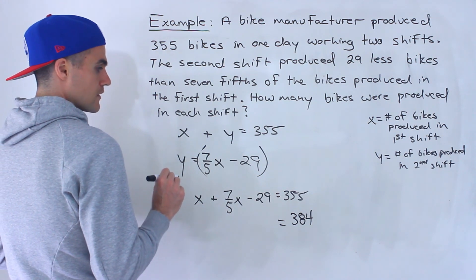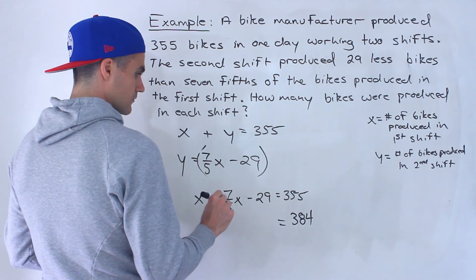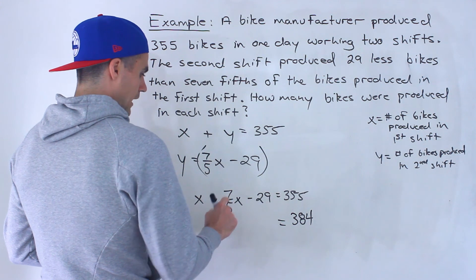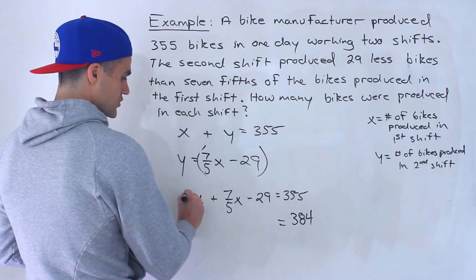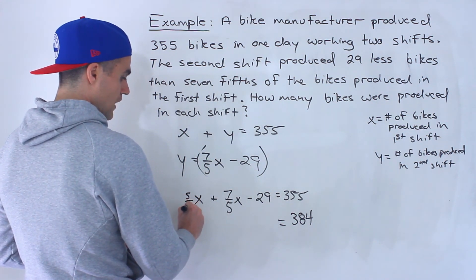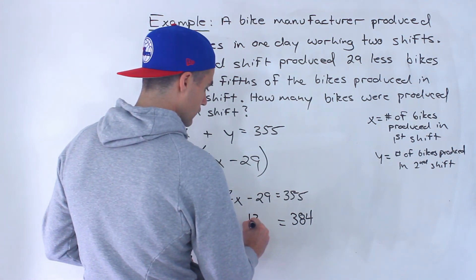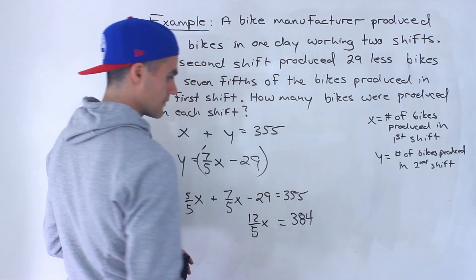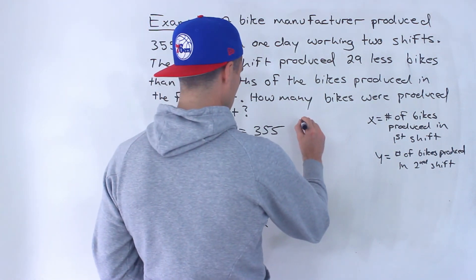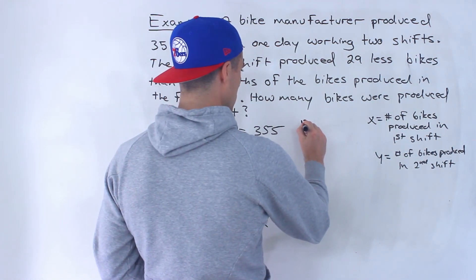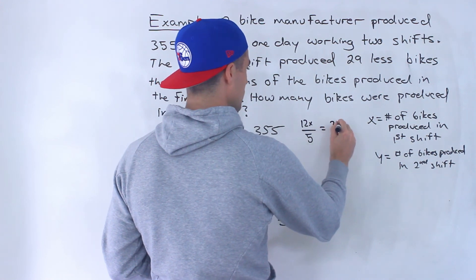So we have 384 on the right side. On the left, 1x plus seven-fifths is like five-fifths x plus seven-fifths x, which gives us twelve-fifths x. So we would have 12x over 5 equals 384.